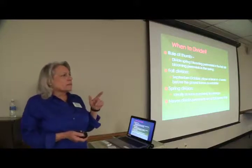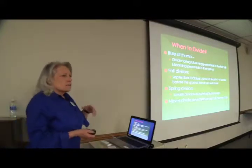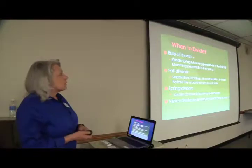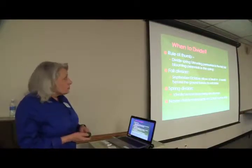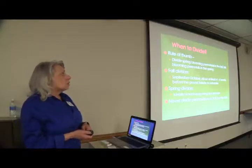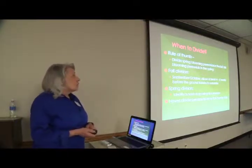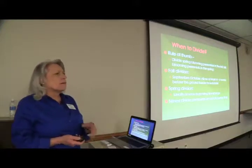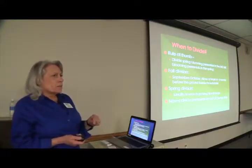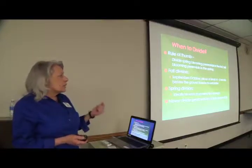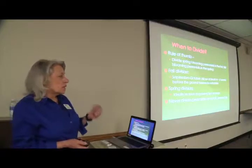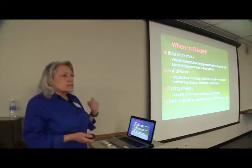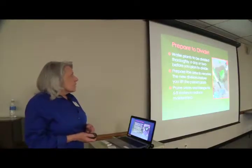Here's a rule of thumb — and everyone should have this handout from Clemson University with good instructions about dividing perennials. Divide spring blooming perennials in the fall and fall blooming perennials in the spring. For fall division, do it in early fall, September and October, allowing at least four to six weeks before the ground freezes. For spring division, do this as soon as growing tips emerge, and never divide perennials on a hot sunny day.